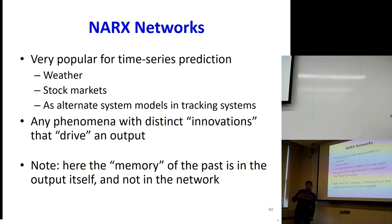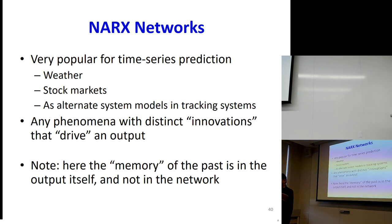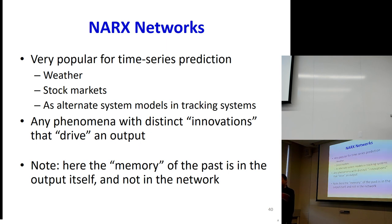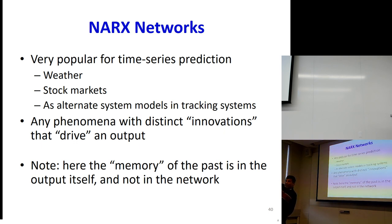Observe where the memory of the network lies. There's nothing inherent in the network itself that has memory — the network is not remembering anything. All of the past is being remembered through the output. The output carries information about the past, and by looping back over the output you're carrying information about the past. What we really want to do is grab this information about the past from the output and make it intrinsic to the network.